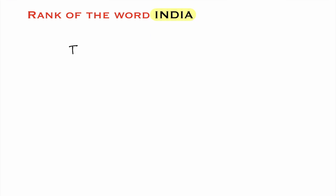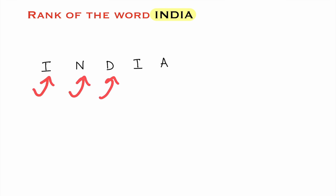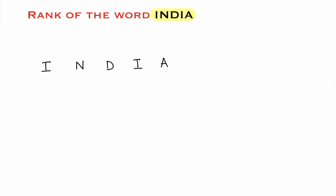First, as usual, you write all the letters of the word India. Now you give numbers to these letters as per alphabetical order. A comes first, so you give number one to A. Next, A B C D — D is number two. E F G H I — I is number three.